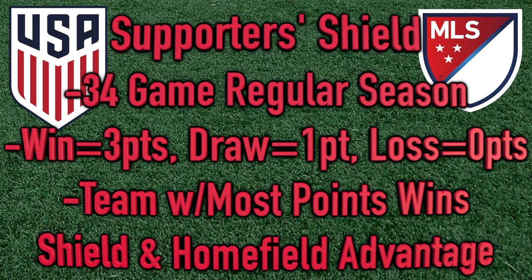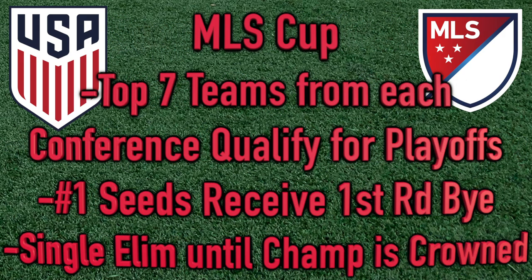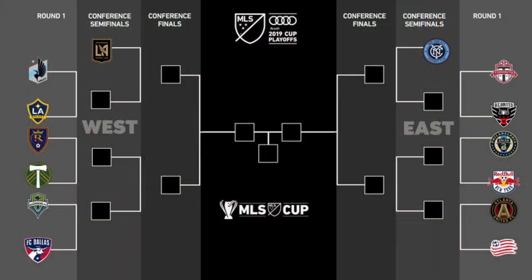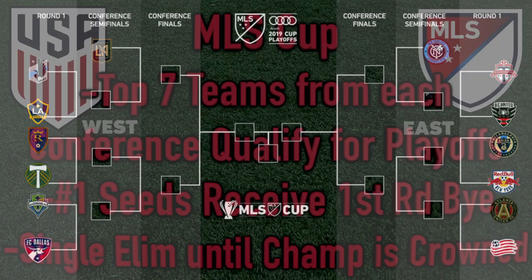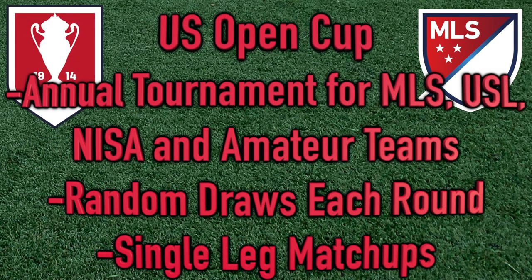At the end of the 34-game regular season, the team with the highest point total is awarded the Supporters' Shield, as well as home field advantage throughout the playoffs. The top seven teams in the West and top seven in the East qualify for the postseason knockout tournament to decide the MLS Cup winner. Here's a look at the bracket from 2019: the top seed in each conference gets a first-round bye, all matchups are single-leg ties with the better seed hosting, and that includes the final. The Eastern and Western Conference champions meet in the final, with the winner crowned MLS Cup champion after 90 minutes — or extra time and penalties if needed.